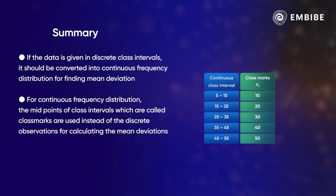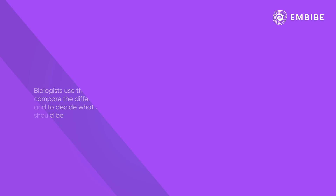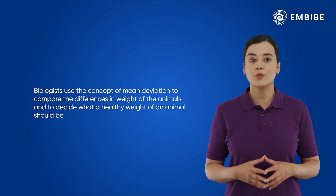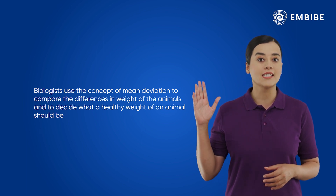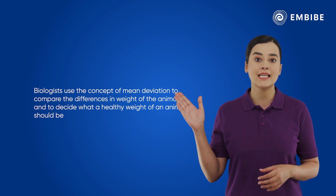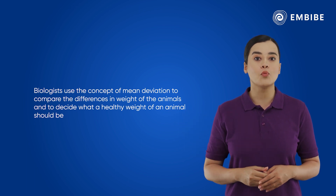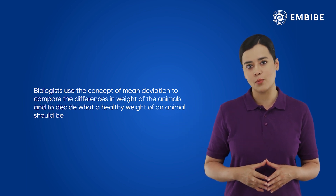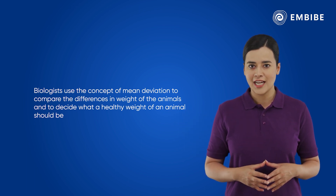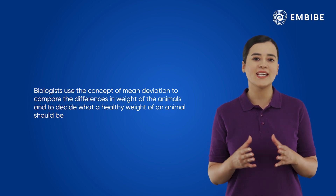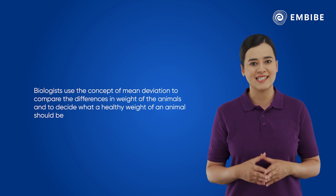For a continuous frequency distribution, class marks (midpoints of class intervals) are used instead of discrete observations when calculating the mean deviation. Interestingly, biologists use the concept of mean deviation to compare differences in the weight of animals and to decide what a healthy weight of an animal should be. We will learn more about mean, median, and mode in our upcoming sessions.